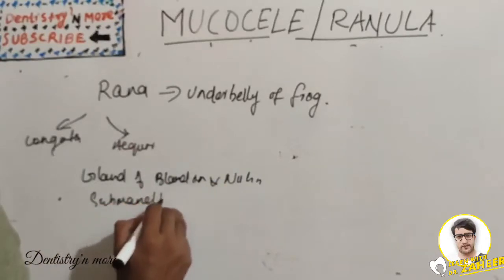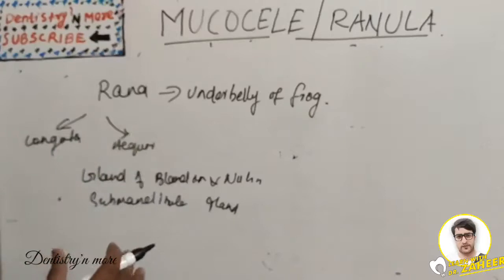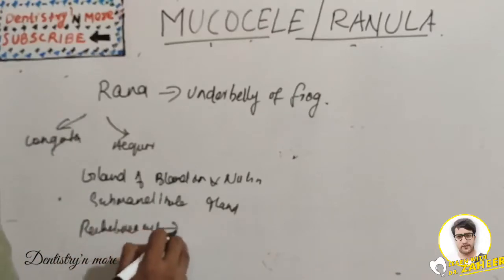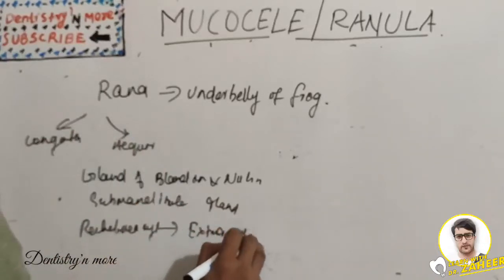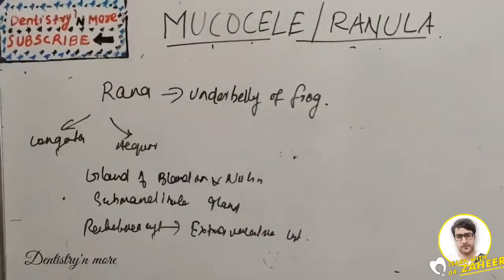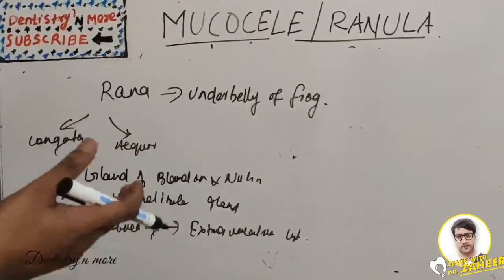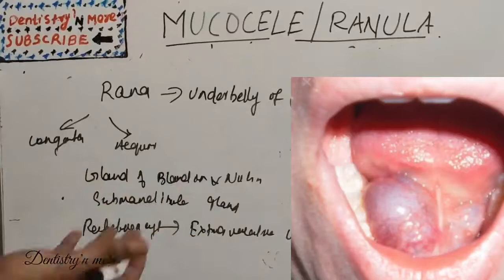Initially there is a blockage of the duct which causes a retention cyst, and with increased pressure there is rupture leading to an extravasation cyst — so first a retention cyst forms, then it ruptures and becomes an extravasation cyst. It presents as a smooth cystic swelling under the tongue, usually on one side, as a blue dome-shaped swelling in the floor of the mouth overlying the blood vessels. Ranulas tend to be larger than mucoceles and can fill the floor of the mouth completely, even elevating the tongue.